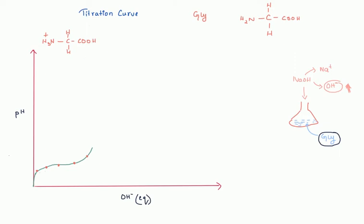As we move through the curve — as pH increases with more OH⁻ added — the H⁺ from the COOH group dissociates, converting it into COO⁻. At one point in the middle of the first part of the curve, there are equal amounts of the fully protonated form (COOH) and this partially deprotonated form (COO⁻).